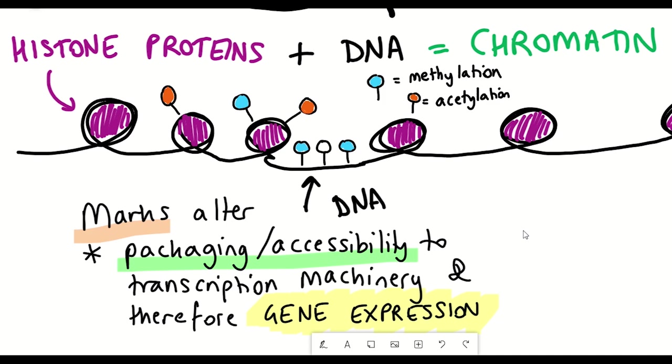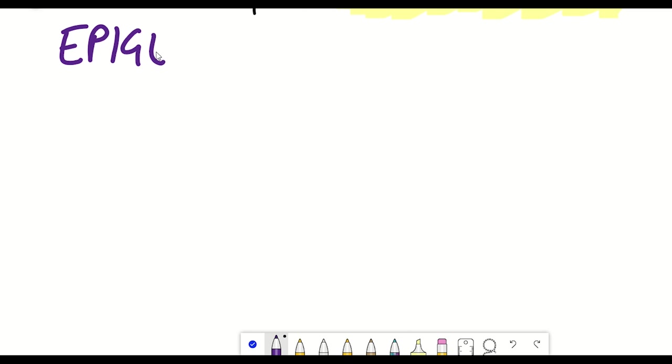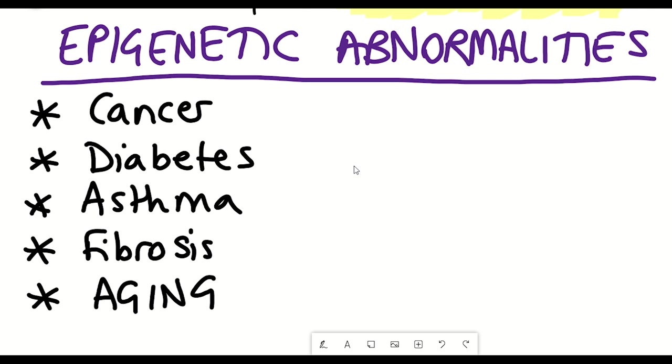And these marks can be heritable, but they can also be reversible. And understanding epigenetic marks and their regulation better is of extreme value, given the fact that epigenetic abnormalities have been associated with various diseases such as cancer, diabetes, asthma, and fibrosis, and also aging itself.